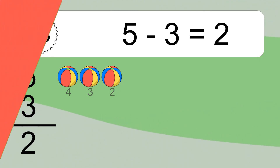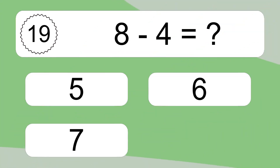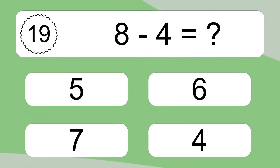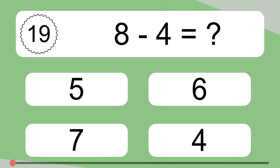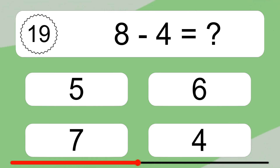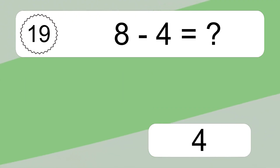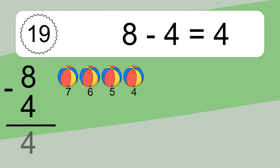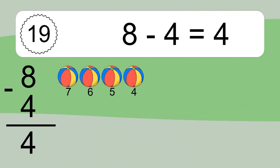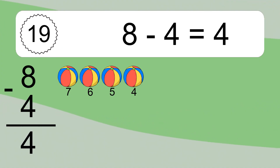8 minus 4 equals what? 8 minus 4 equals 4. Let's count it. 7, 6, 5, 4.